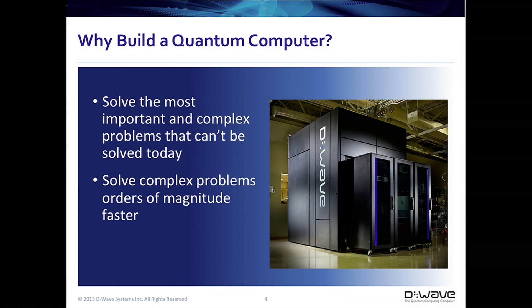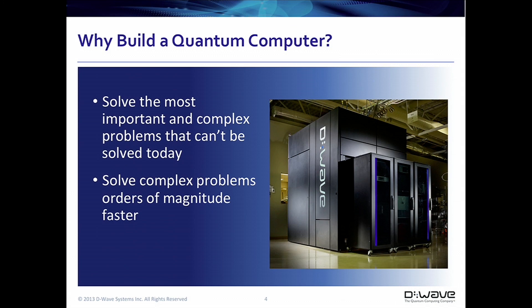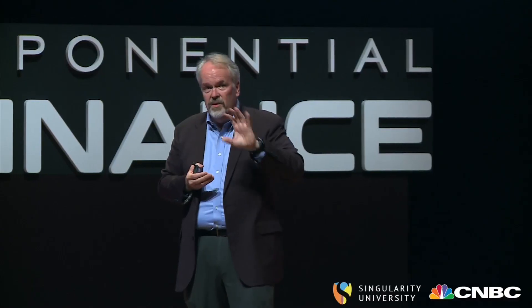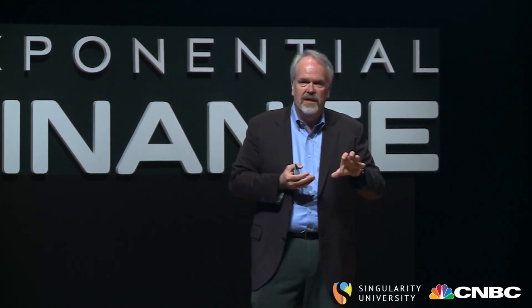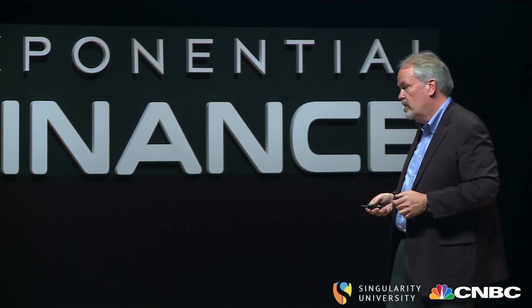So why build a quantum computer? There are classes of problems that are beyond the scope of all computers. If you put all the supercomputers in the world together, there are certain classes of problems that scale in a way you can't manage with classical computing. Quantum computing opens up this whole new space of extremely hard — or if not impossible — problems to solve with classical resources. It also does it, for particular problems, in a more efficient way. This is not a replacement for all of classical computing; it's a hybrid approach using classical resources alongside quantum resources.